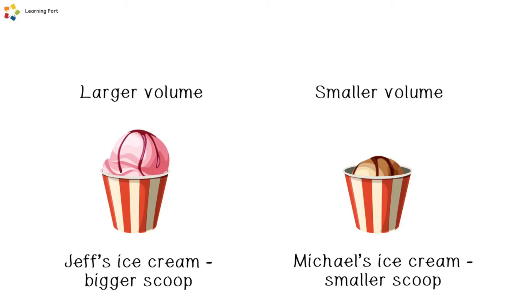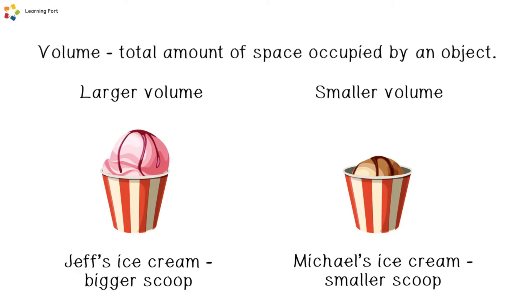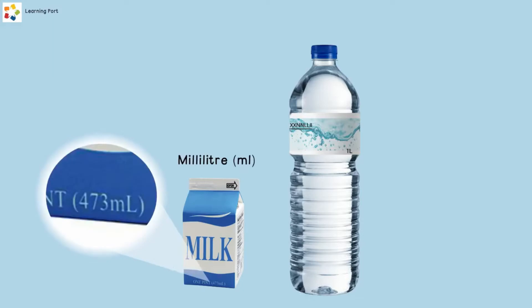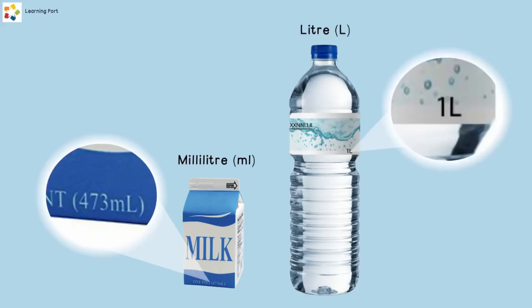But what is volume? Volume is the total amount of space occupied by an object. Volume is measured using measuring tools and is expressed in suitable units. The volume of a carton of milk is expressed in milliliters. The volume of a water bottle is expressed in liters.